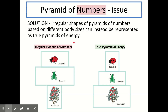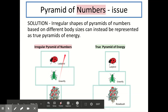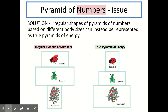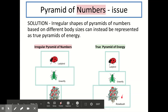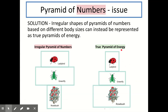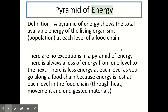The solution to irregular pyramids of numbers based on different body sizes is to represent them instead as a pyramid of energy — which always gives a true, regular pyramid shape. For example, the rose bush, greenfly, and ladybird chain, which gives an irregular pyramid of numbers, looks regular again when converted into a pyramid of energy. We now need to talk about what a pyramid of energy is.